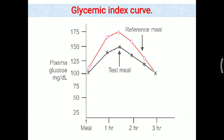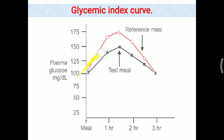We will look further at the picture showing the glycemic index curve. In this graph, the reference meal is shown in red. Once 50 grams of glucose is given, there is a sudden rise of plasma glucose seen around 1 to 1.5 hours. Once insulin is secreted, it gradually lowers down.